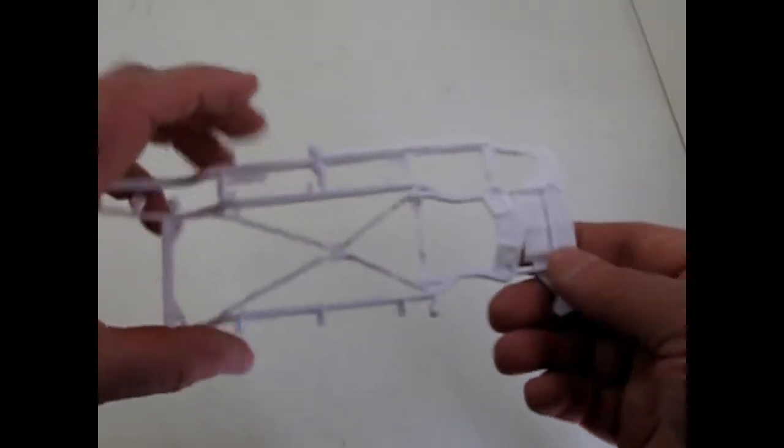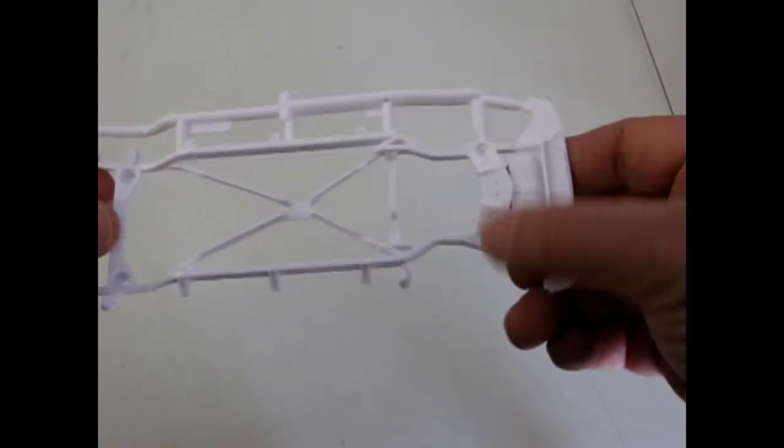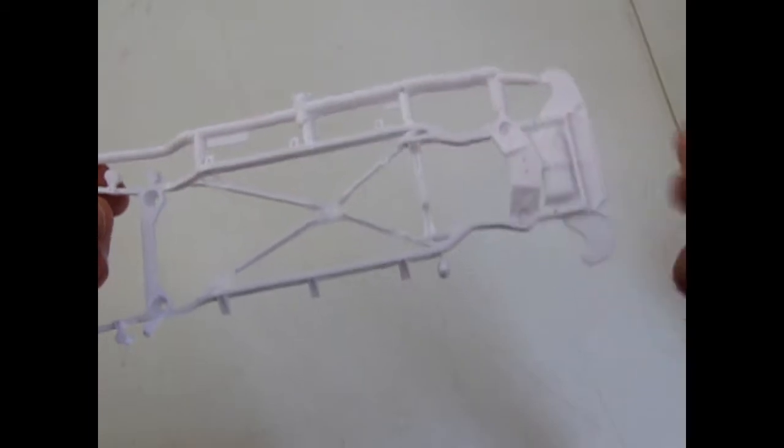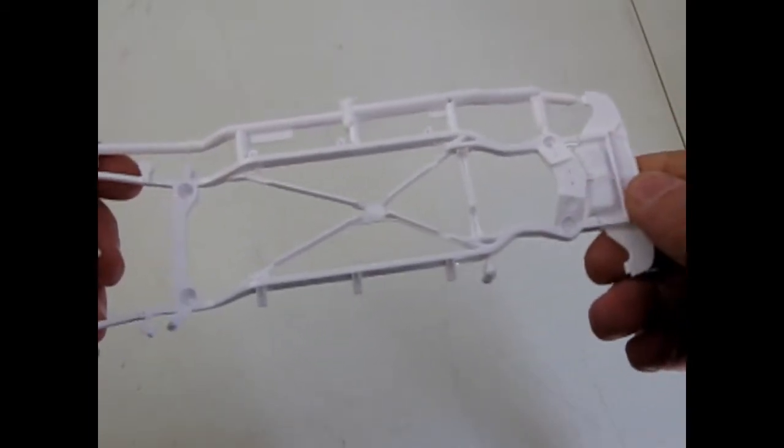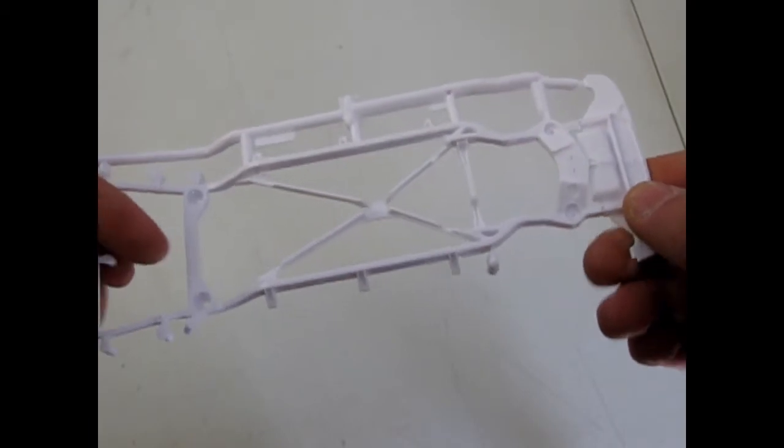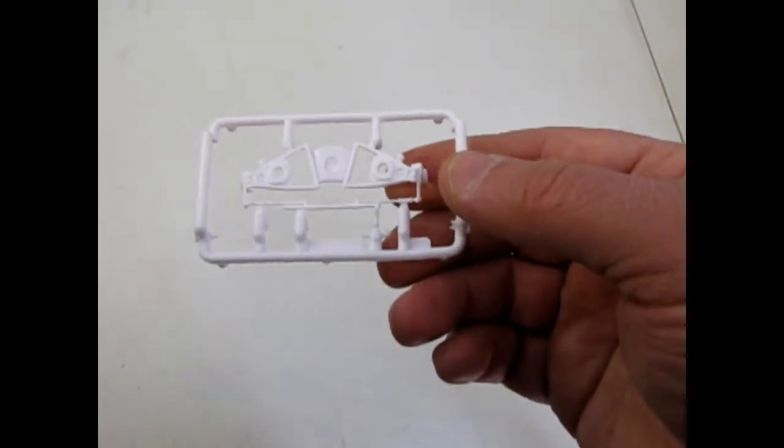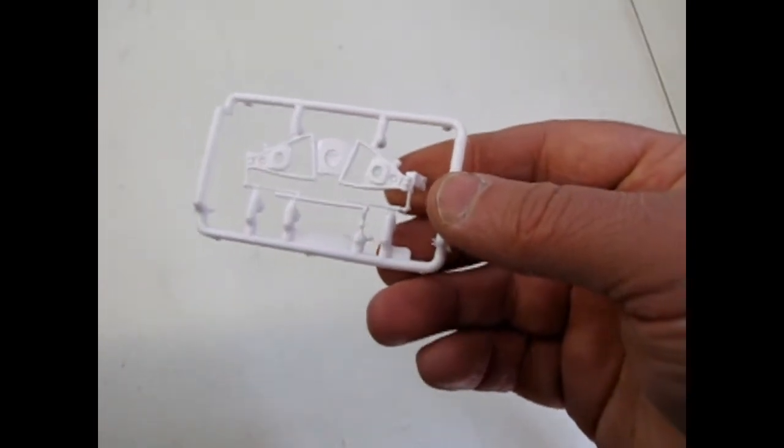And here is the Oldsmobile frame, with the independent coil springs, which I own a real 1972 Oldsmobile. And it uses the same kind of spring suspension. And there's our upper A arms, or lower A arms for the suspension.